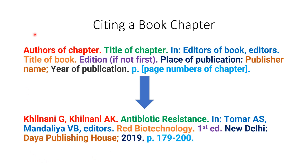This is the format of citing a chapter in a book. We can see that the different components have been marked in different colors. There are nine components. This is an example of citing a book which has been edited. There is a separate format for citing a non-edited book, but here I will be describing how to cite a book chapter of an edited book.